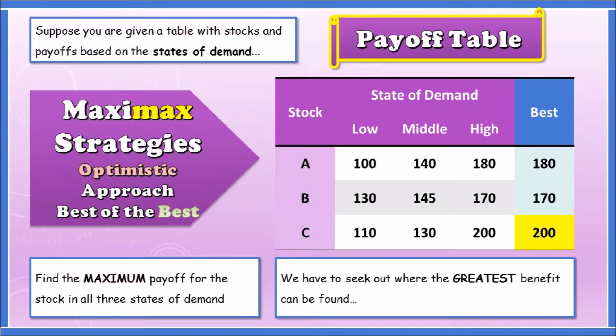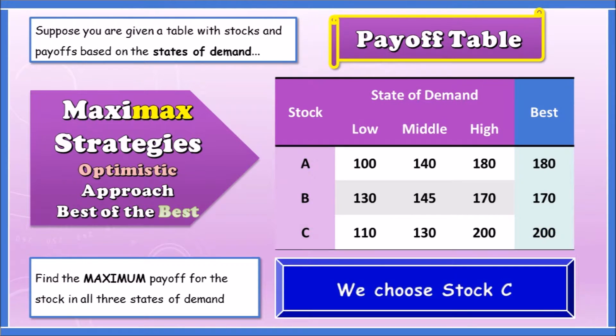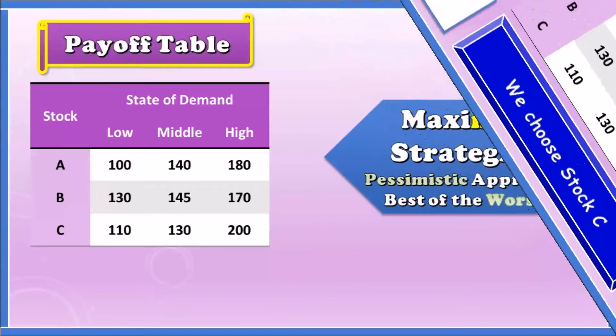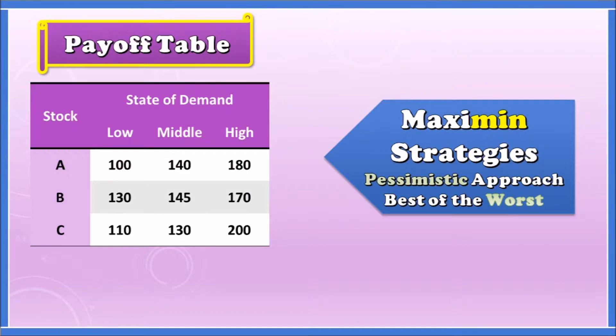Now under the maxi-max we just want to find the best of the best, so the best of the best is going to be 200. That's it — the maxi-max is 200, which is Stock C. This would be the greatest benefit found for an investor.